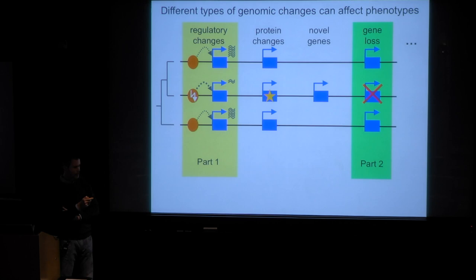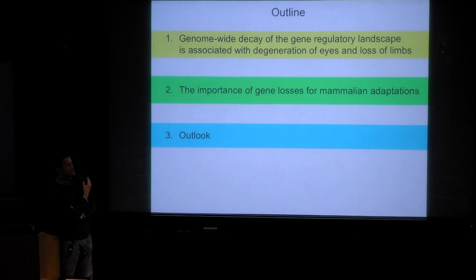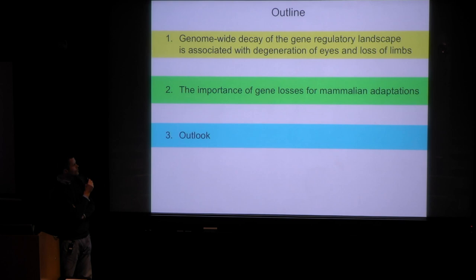For this talk I will only focus on two types of changes. In the first part I will talk about differences in gene regulatory elements and how this is associated with losing functional eyes and limbs. In the second part, I will show you that sometimes losing genes can be an advantage. Then I will conclude with an outlook.